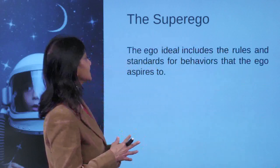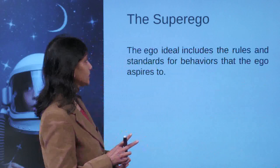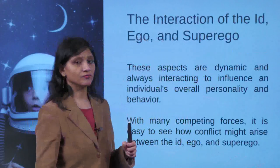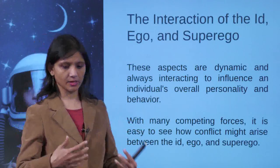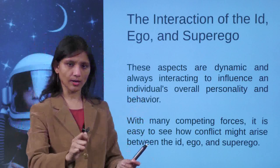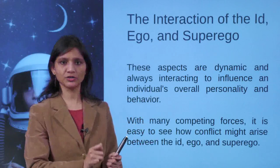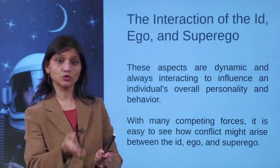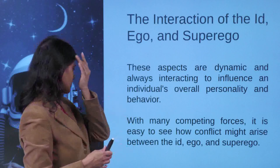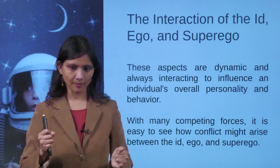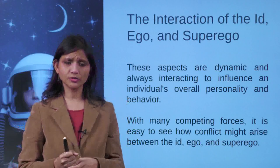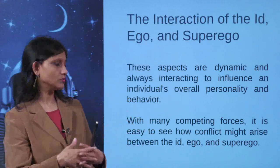The ego ideal includes the rules and standards for behavior that the ego aspires to. So the superego is formed around age five and governs right, wrong, and judgment. The interaction of the id, ego, and superego is dynamic — these aspects keep changing and always interact to influence an individual's overall personality. The pleasure principle of the id is still there as you grow up, but the ego tells you right from wrong, and the superego asks you to judge. Your mind always has this battle between the three.